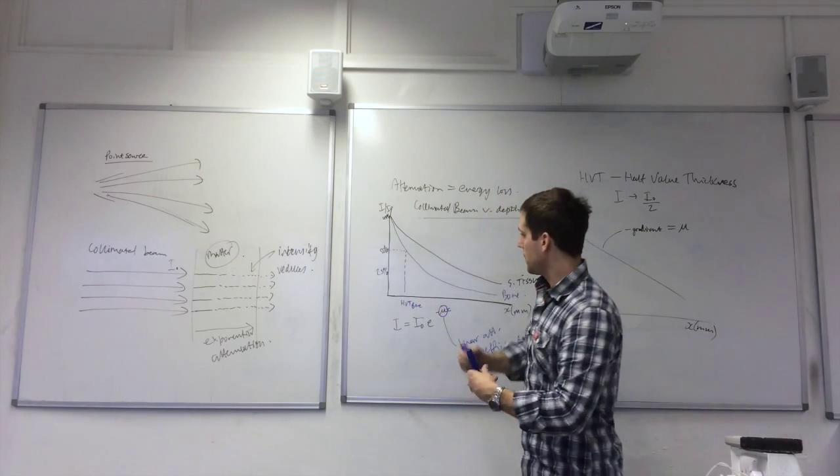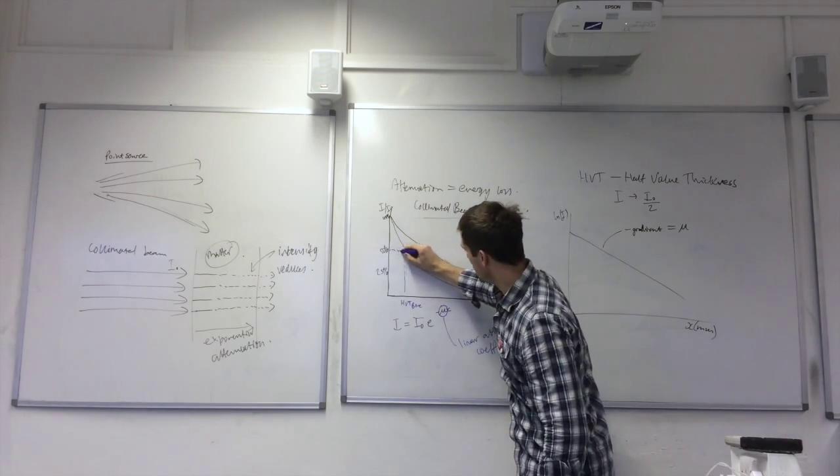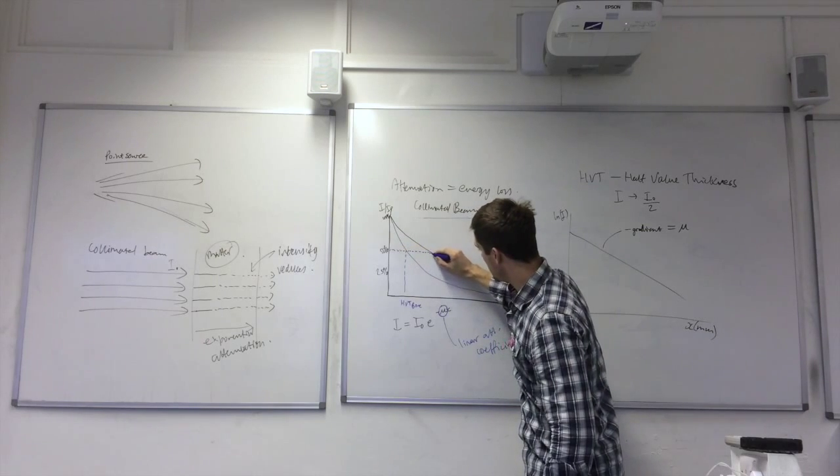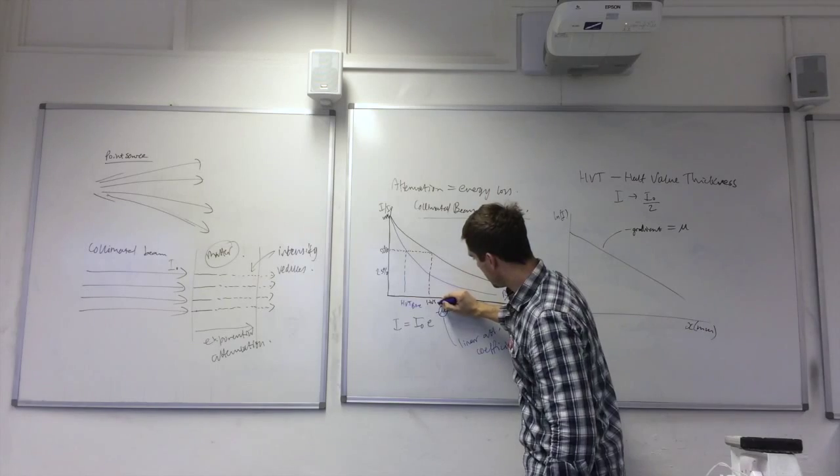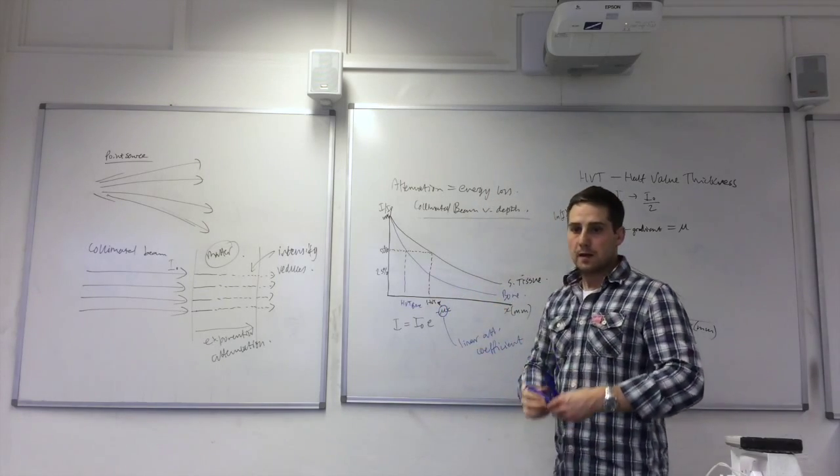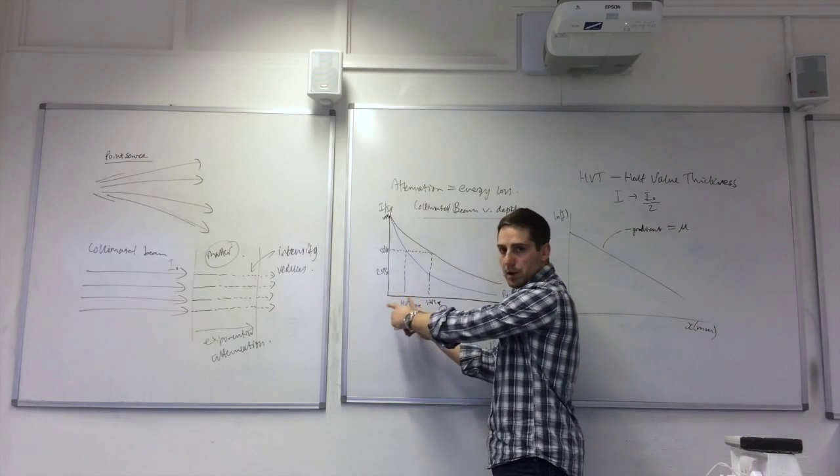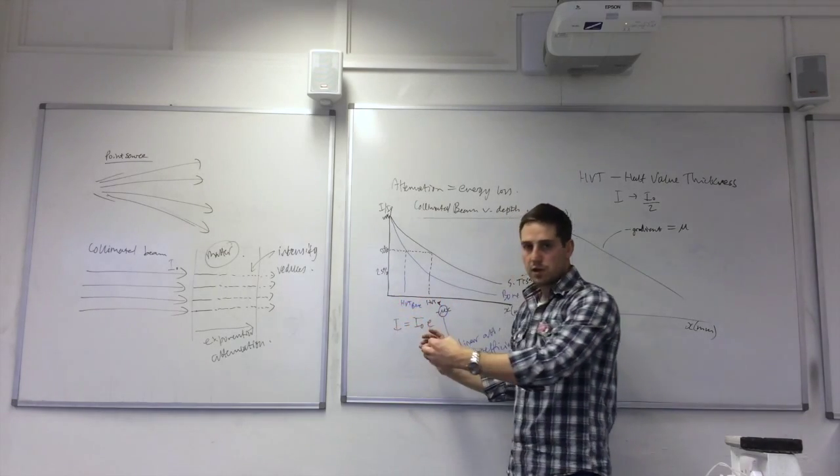And then the half value thickness for soft tissue, again coming to where the 50% is, it's over here. So that's the half value thickness for soft tissue. So the half value thickness for bone is smaller than that for soft tissue.